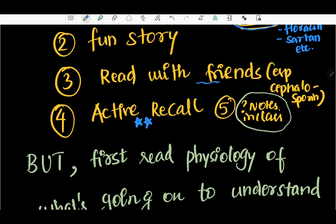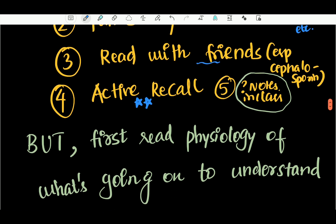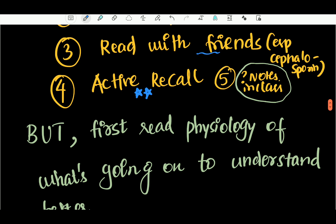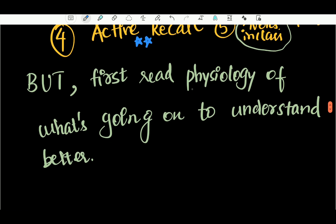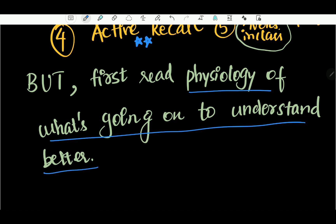Then you have to go and say — if you are doing active recall, you will say: this is a drug, this is a mechanism. So you connect the mnemonic and the story, and it will be a little easier.